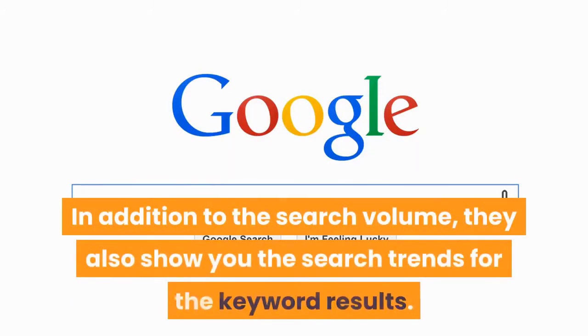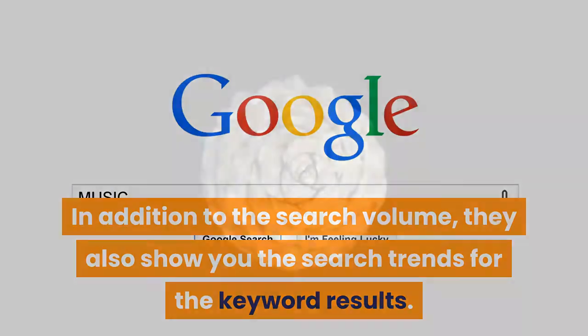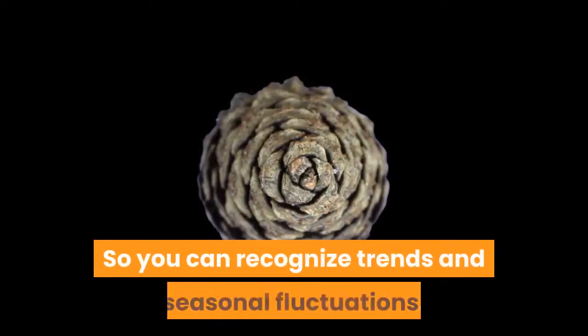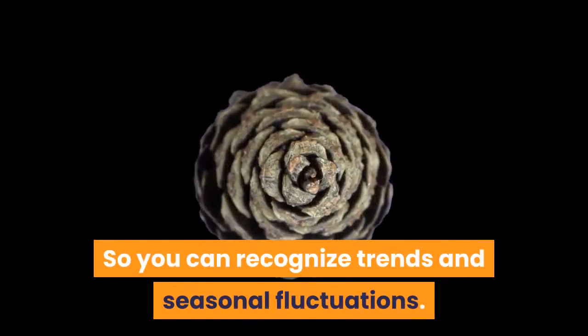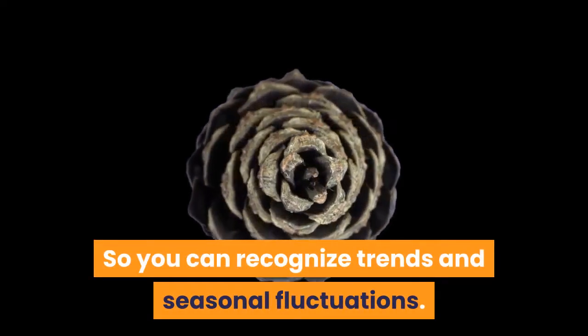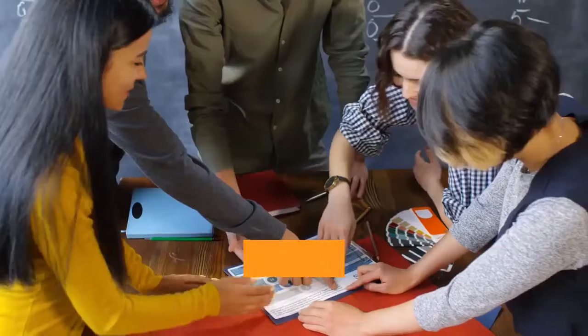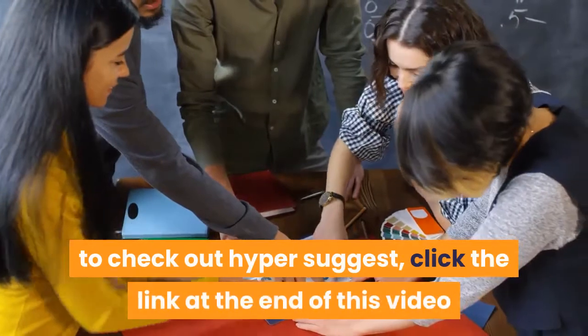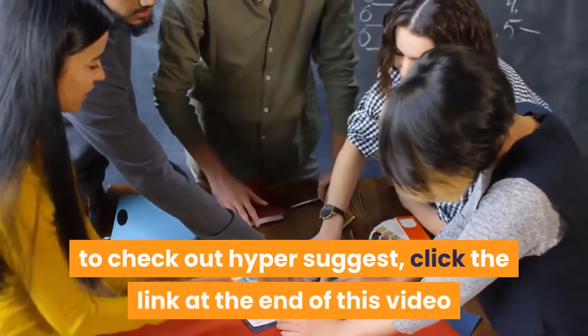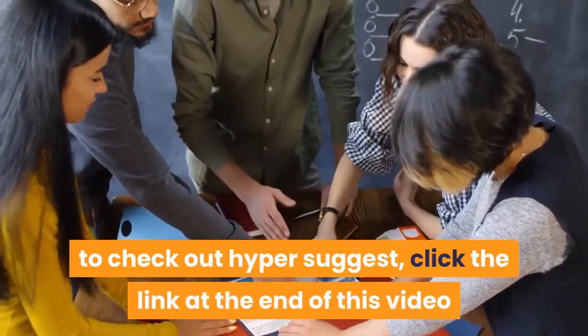In addition to the search volume, they also show you the search trends for the keyword results, so you can recognize trends and seasonal fluctuations. To check out HyperSuggest, click the link at the end of this video.